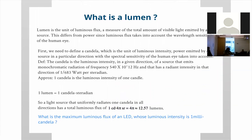The lumen is the unit of luminous flux — a measure of the total amount of visible light emitted by a source. Visible light is what our human eye is sensitive to. This differs from power (the analogous radiometric quantity) because luminous flux takes into account the wavelength-dependent sensitivity of the human eye.